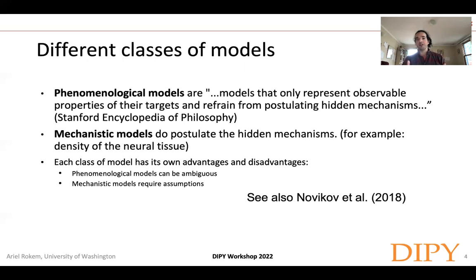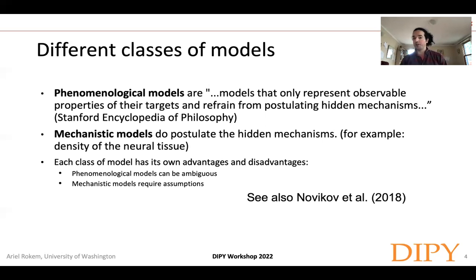There are different classes of models you can use to interpret diffusion MRI data. The first are phenomenological models, which only represent the observable properties of their targets and refrain from postulating hidden mechanisms. In contrast, mechanistic models do postulate hidden mechanisms — for example, you might have a model that postulates the density of neural tissue within a voxel, even though that's not directly observable. Phenomenological models can be quite ambiguous, while mechanistic models require many assumptions about how the biophysics of the tissue becomes the measured signal.